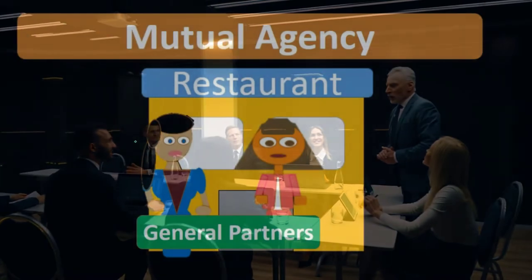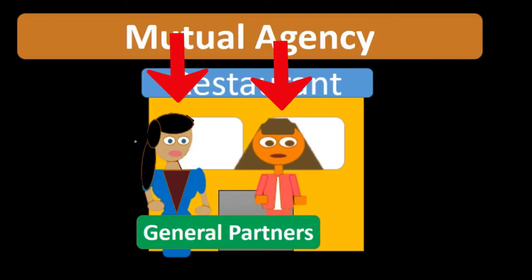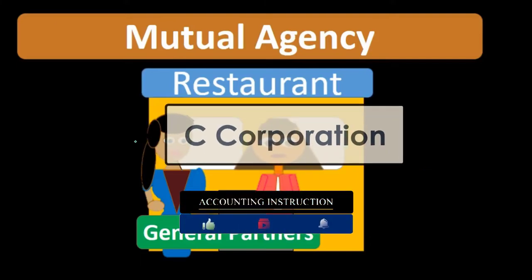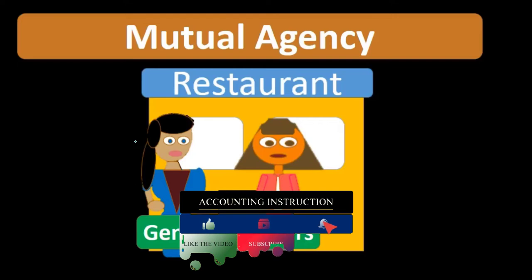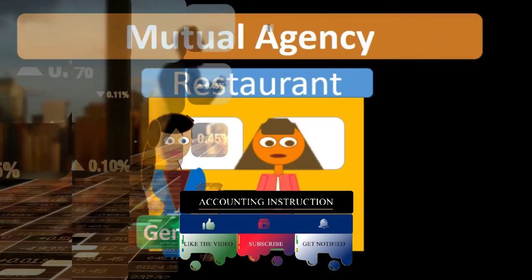A general partnership does not limit liability to just the assets of the partnership. If there is a problem, the individual partners have less liability protection in a general partnership compared to other entity types, such as a C corporation, where partners have greater liability protection.